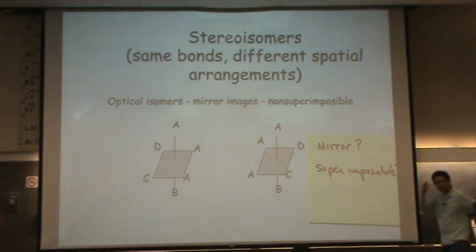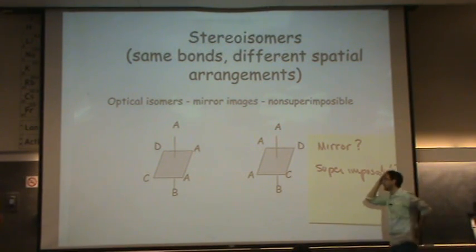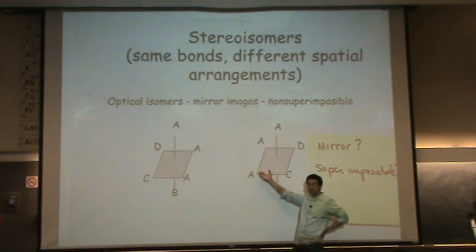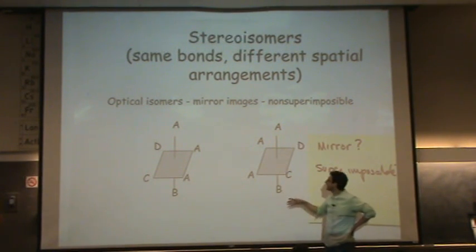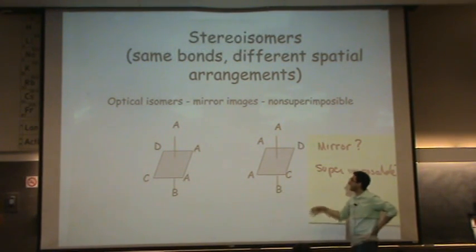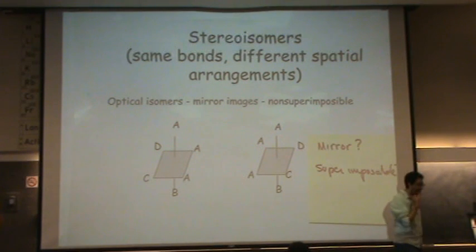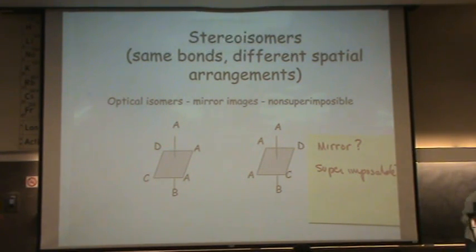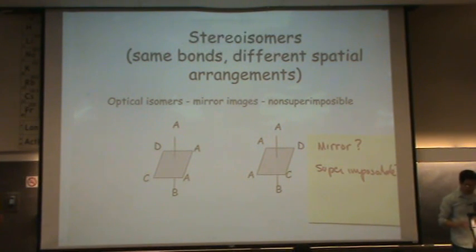Another way you could have figured that out, if you can't visualize it: it's FAC. They're FAC, and the other three ligands are different than A — there's a B, a C, and a D. Because of that, it's going to be chiral. So yes, they're optical isomers.